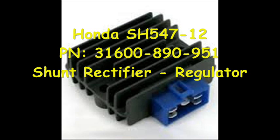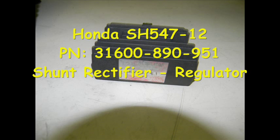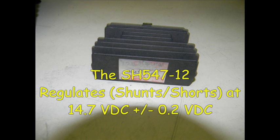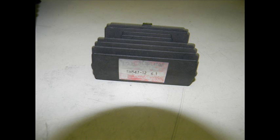It's basically an SH547-12. It's a shunt type, which means it's a short circuit regulator. Here's the back view of that same regulator. This is the actual regulator off of my RT5000 tractor and it shunts or short circuits regulates the voltage at about 14.7 volts DC.